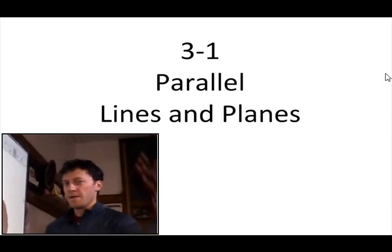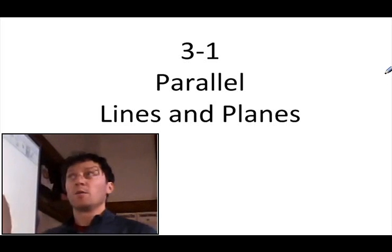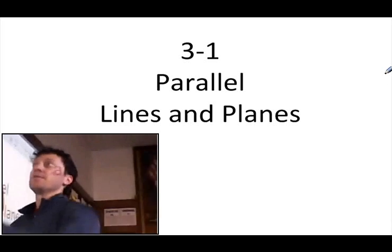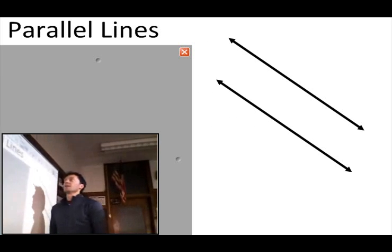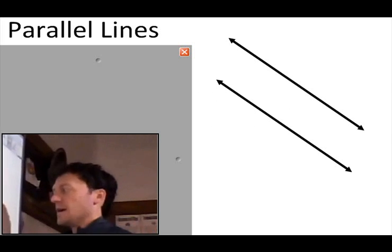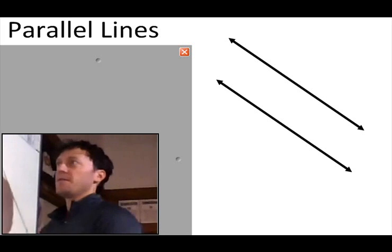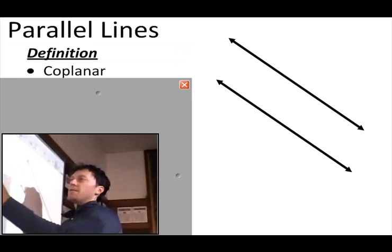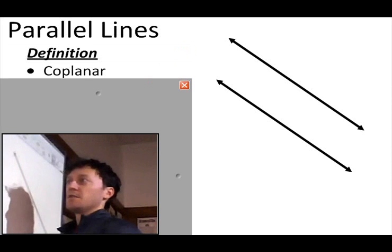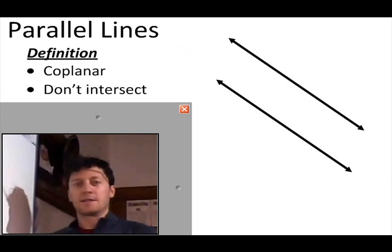This is 3-1, Parallel Lines and Planes. Please feel free to pause at any time if you'd like to take a second to catch up. Let's first talk about parallel lines. The definition: they are coplanar lines, meaning they're in the same plane, and at the same time they don't intersect.